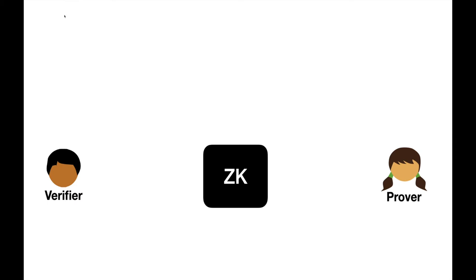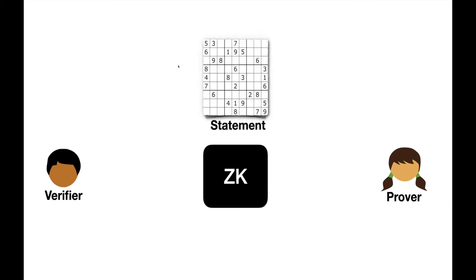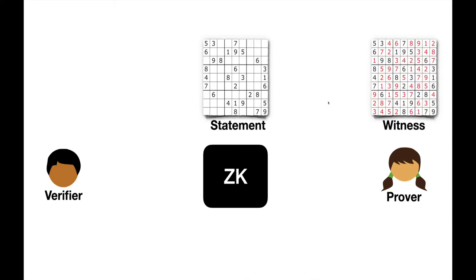Recall that a zero-knowledge proof is a type of proof system run between two parties, a prover and a verifier. The two parties agree on some public statement which the prover claims to be true. As evidence, the prover holds a witness. However, the prover may wish to hide her witness from the verifier because it may contain sensitive information. An interactive zero-knowledge protocol allows the prover to convince the verifier that the statement must be true while keeping the witness hidden. While the verifier becomes convinced, he learns no information from the protocol interaction.